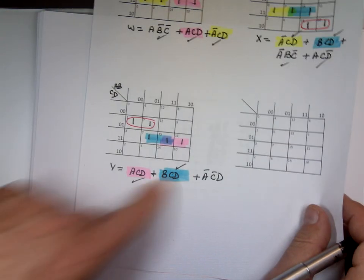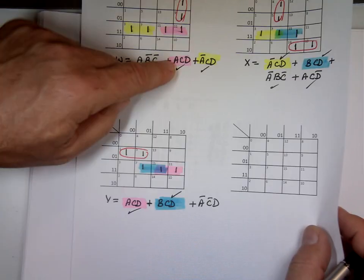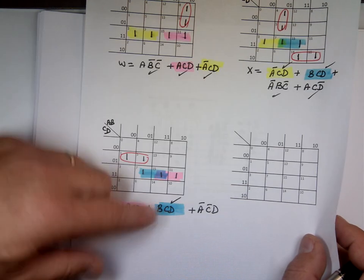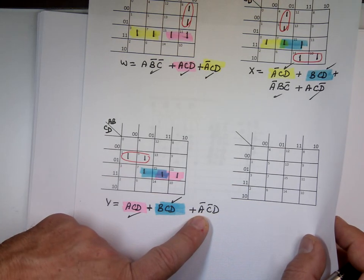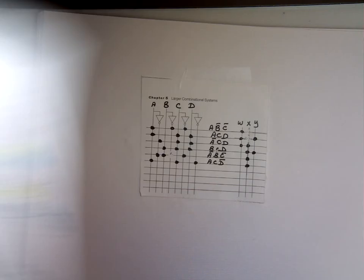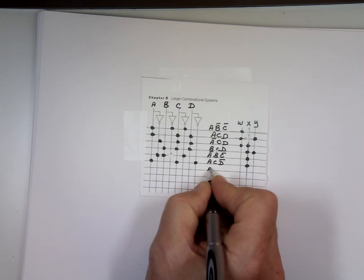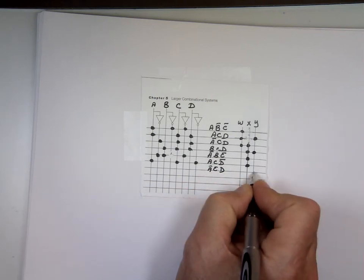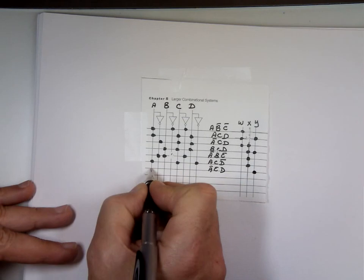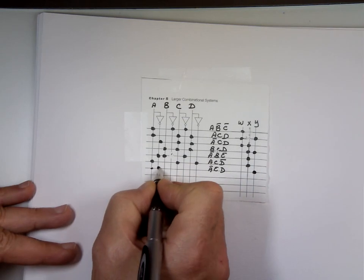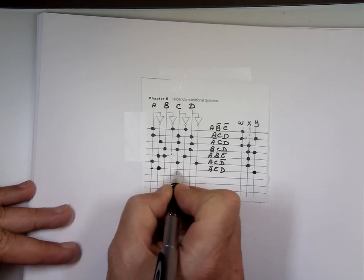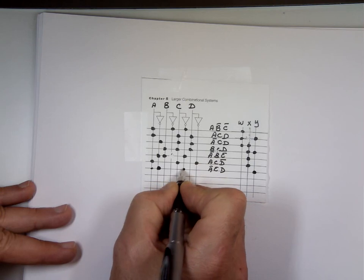I already covered two of the gates in Y. Notice I used them somewhere else. I got the pink from here. I got the blue from here. So I only have to add one more. A bar, C bar, and D. And that would be Y. A bar, C bar, and D.